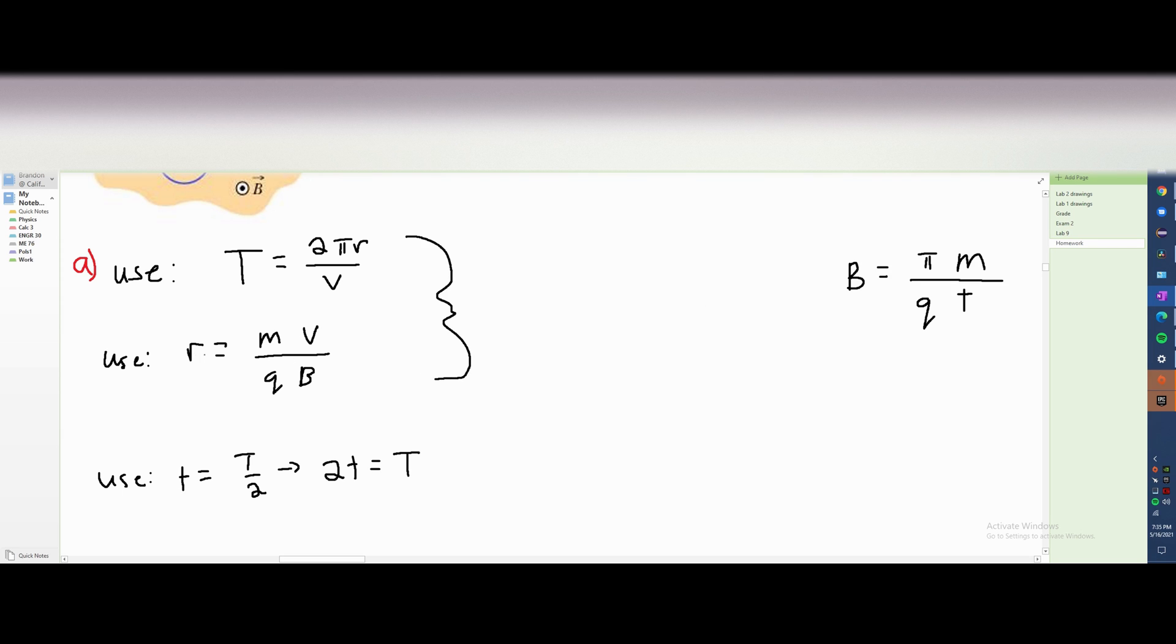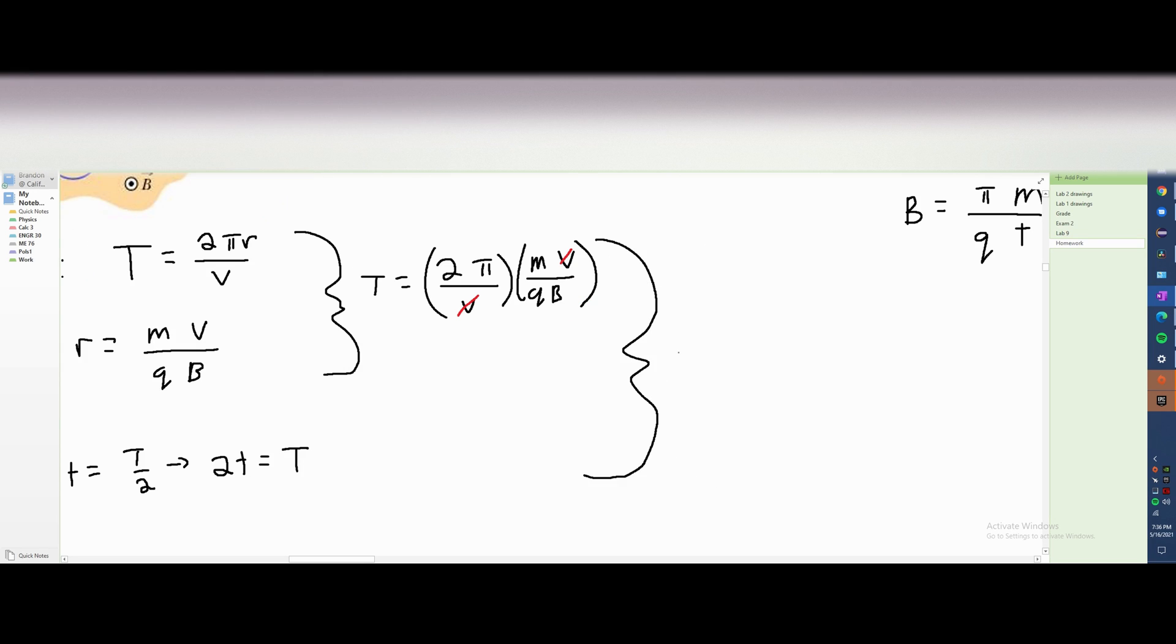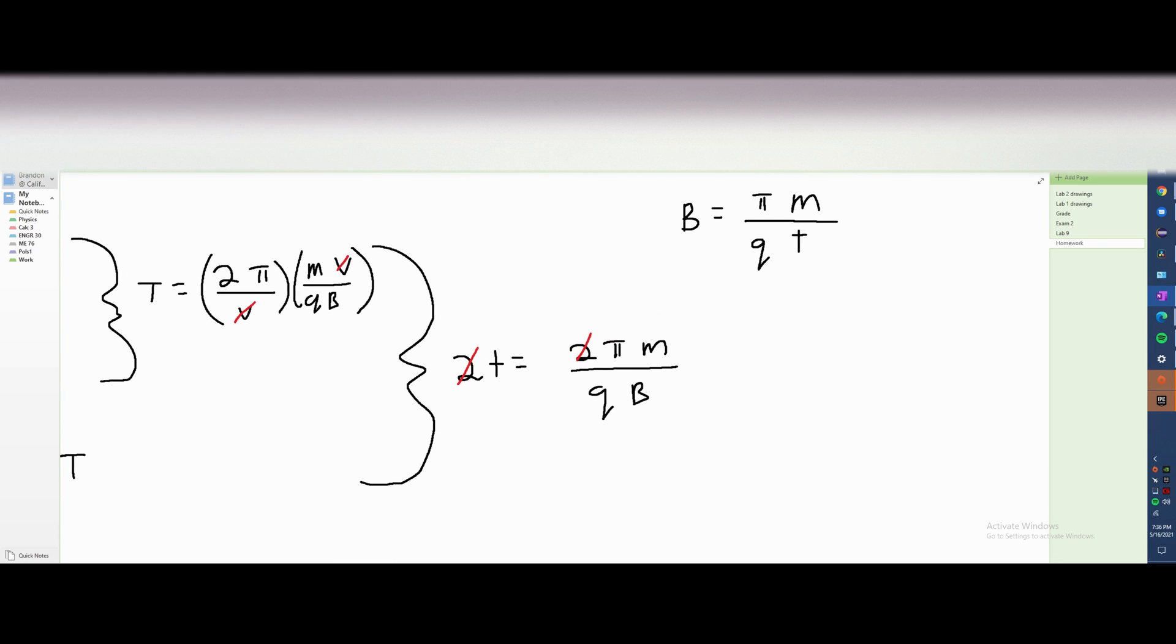And this is just going to change to be 2T is equal to T. First, combine these. We're going to substitute our R in. So we're going to have T is equal to 2π over V times mV over charge times B. From here, our Vs can cancel out. And now we can plug in our 2T. And so we are going to have this and this bottom part. And this is just going to be 2T is equal to 2π mass over charge of B. We can get rid of these 2s. And then if we bring B to this side and then bring T down here, we're going to see that this is equivalent to the formula right here.